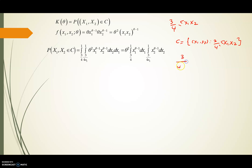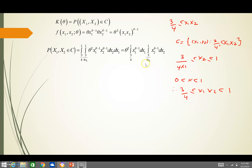We have (3/4)*X1 ≤ X2 ≤ X1. In the first case, we integrate with respect to X2, so X2 runs from (3/4)*X1 up to 1. For the outer integral with respect to X1, we integrate from 3/4 up to 1. Since the range of this PDF is 0 < x < 1, we have the region (3/4)*X1 ≤ X2 < 1. We factor out theta^2, giving X1^(theta - 1) from 3/4 to 1 and X2^(theta - 1) from (3/4)*X1 to 1.